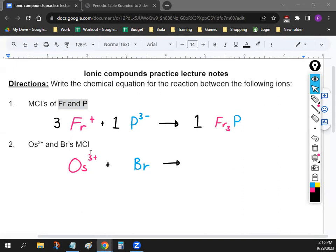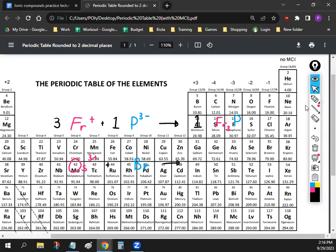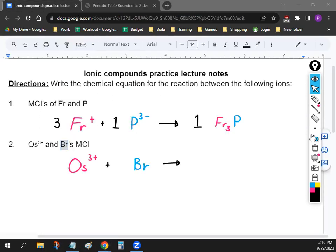Okay. So we're going to find the MCI for Br. So if you take a look at Br, Br is right here on the right side. So it's going to be negative one. So Br is negative one.